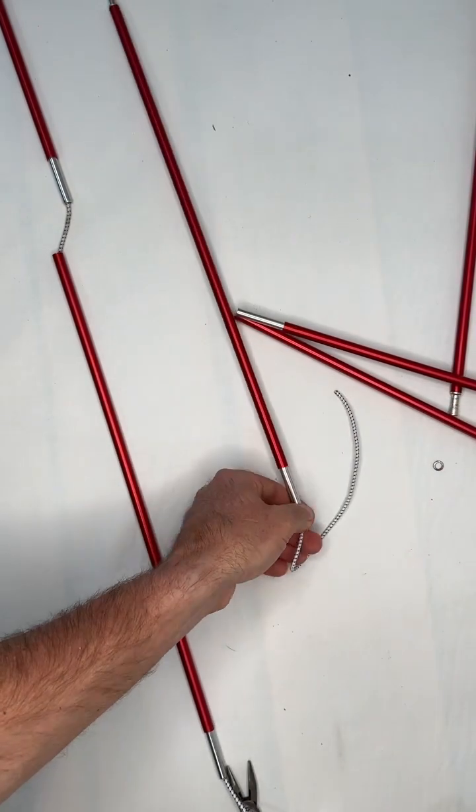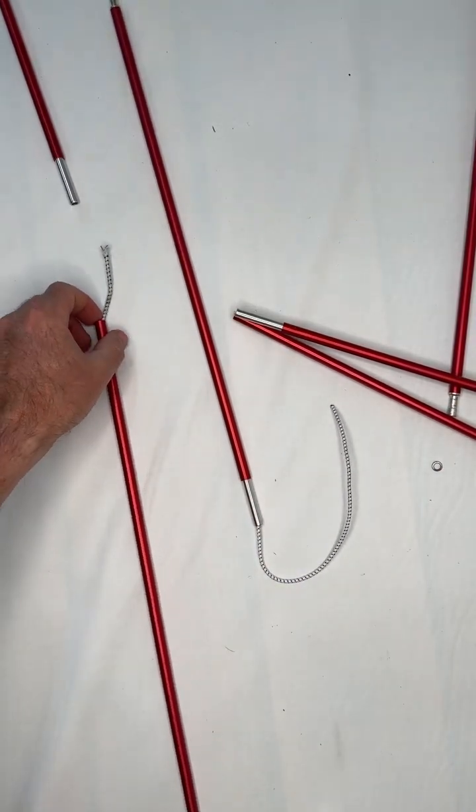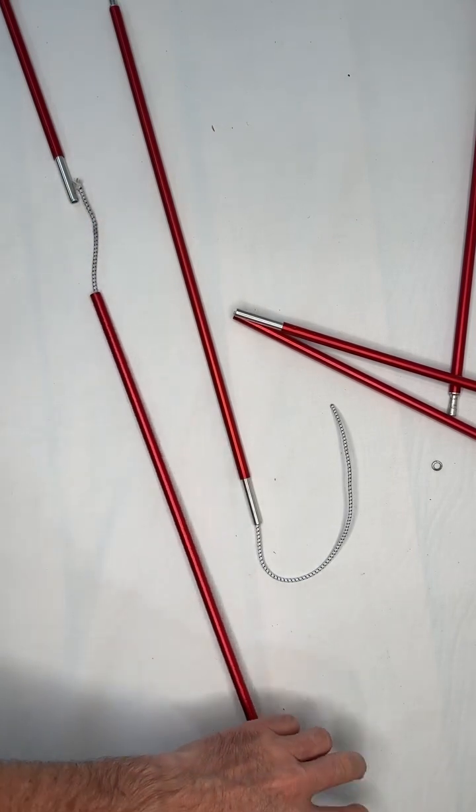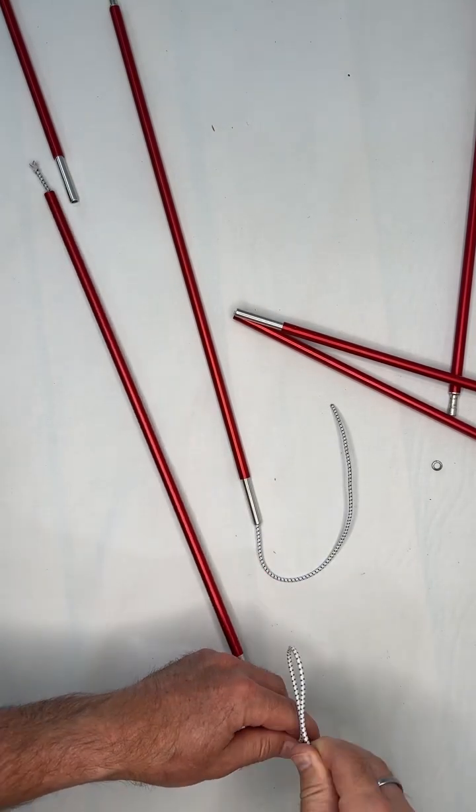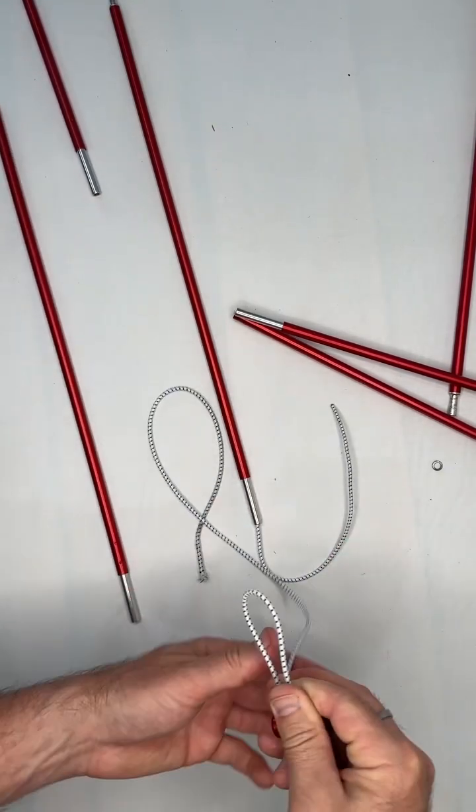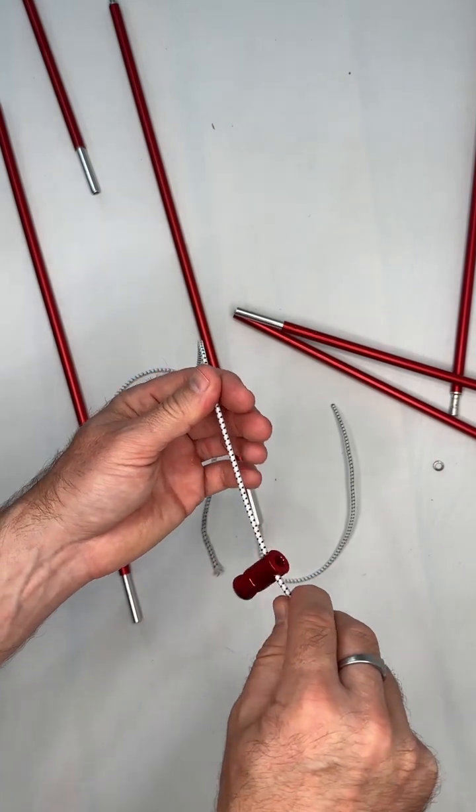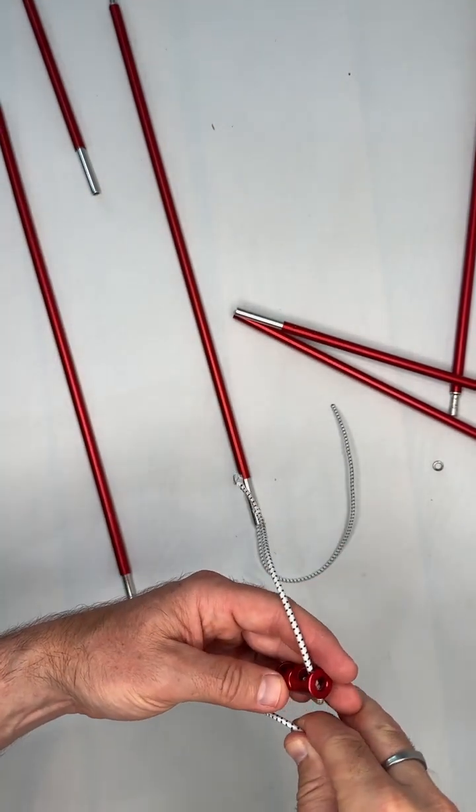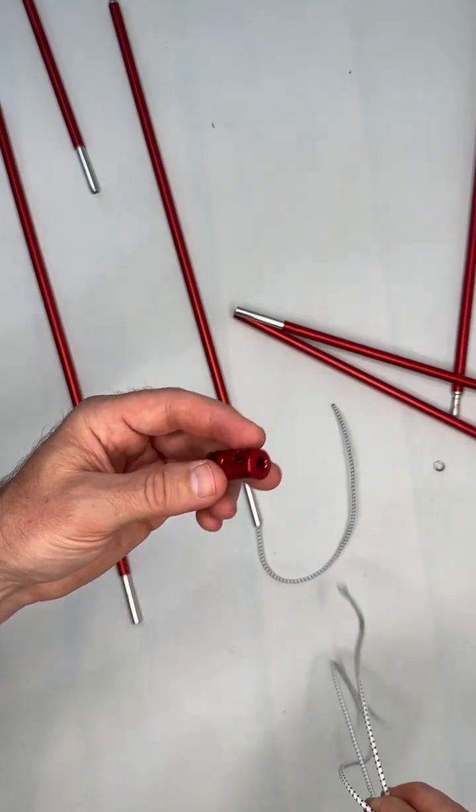We'll set this one over here to the side. Then we have these two other ones that will go into the middle joint. I'm going to pull this apart, pull this out, and now this little middle one. See, this was broken. I can come in here and pull this out.